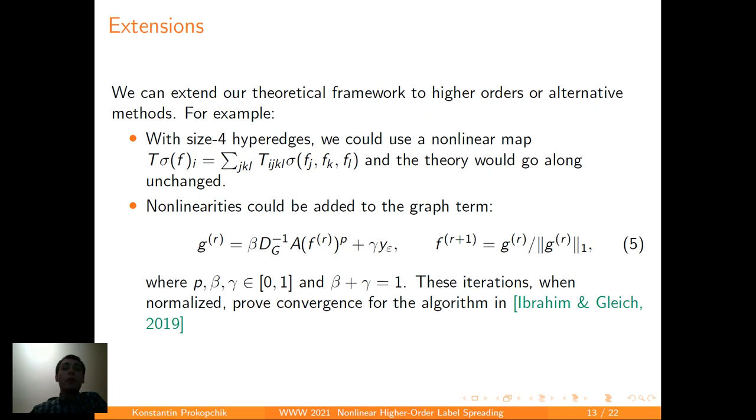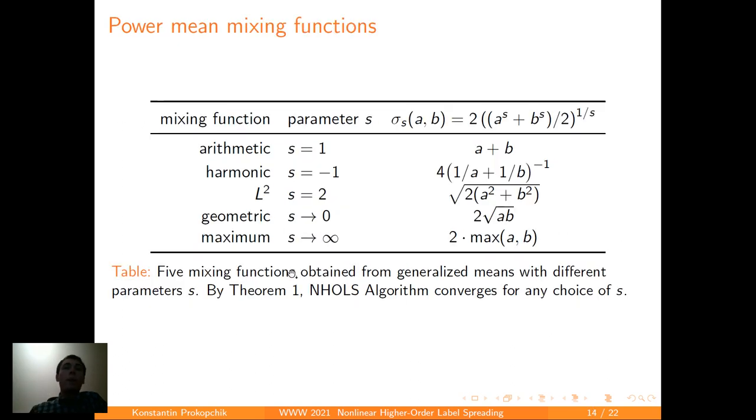As I mentioned before, we can extend the algorithm to higher orders. One case would be to use size 4 hyper-edges, where we could use a nonlinear map in a similar fashion that we did for size 3 hyper-edges. It's just here where the function would be of three variables, and the tensor would be of four dimensions. But the rest of the theory would go along unchanged. Another thing we've noticed that if we take the iterations from the algorithm produced by authors of this paper here, and we add the normalizations after each step, then our theorem allows us to prove the convergence of these iterates, which is a very nice result, we think.